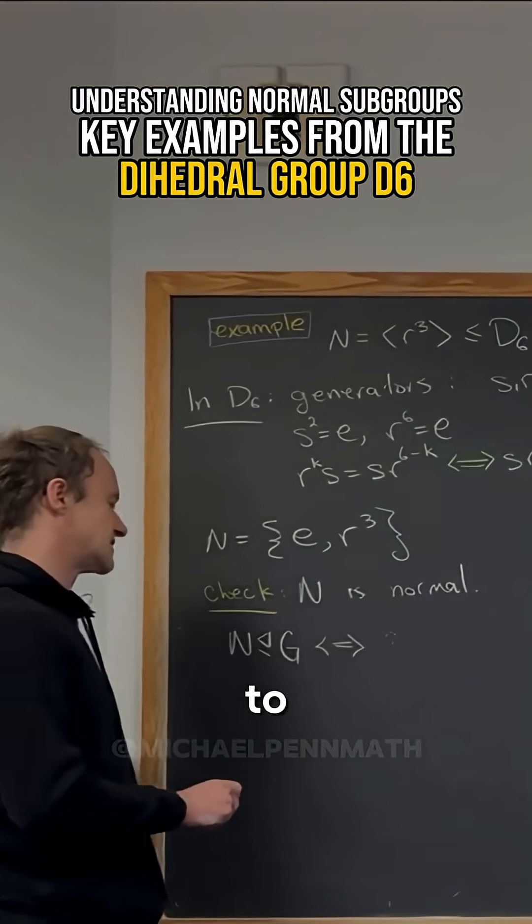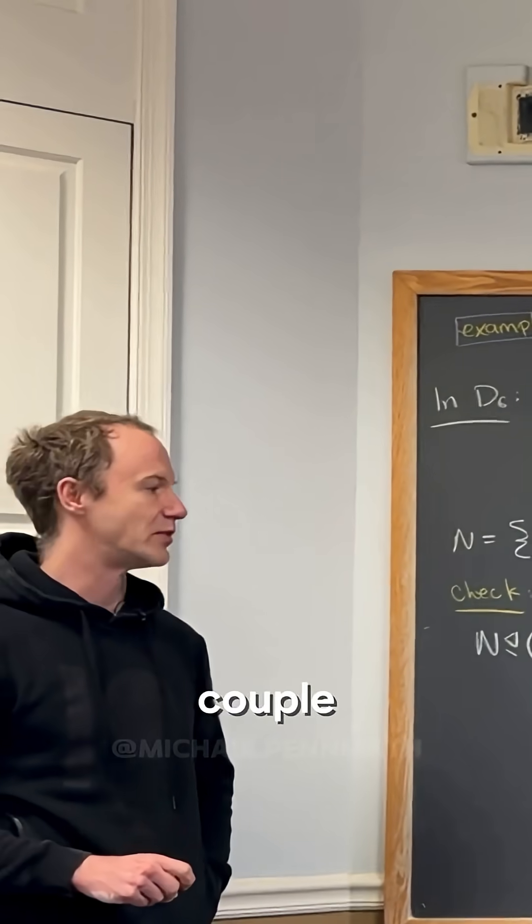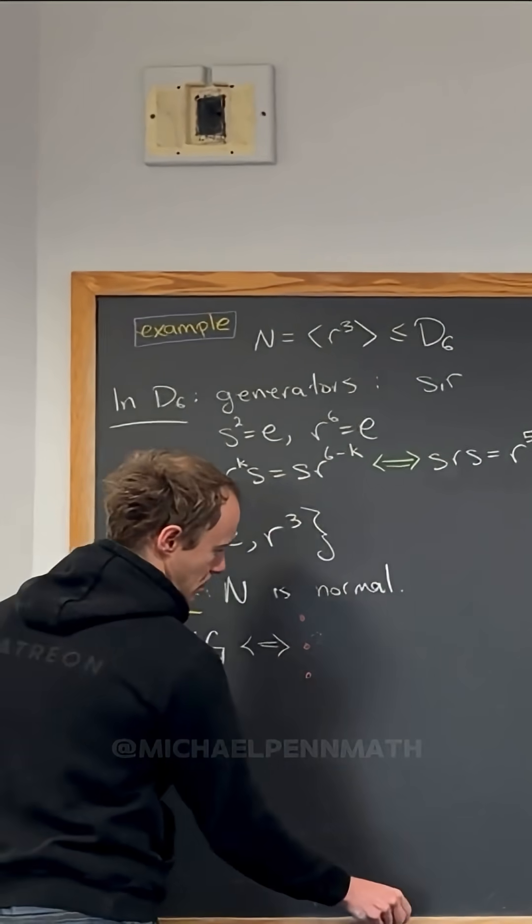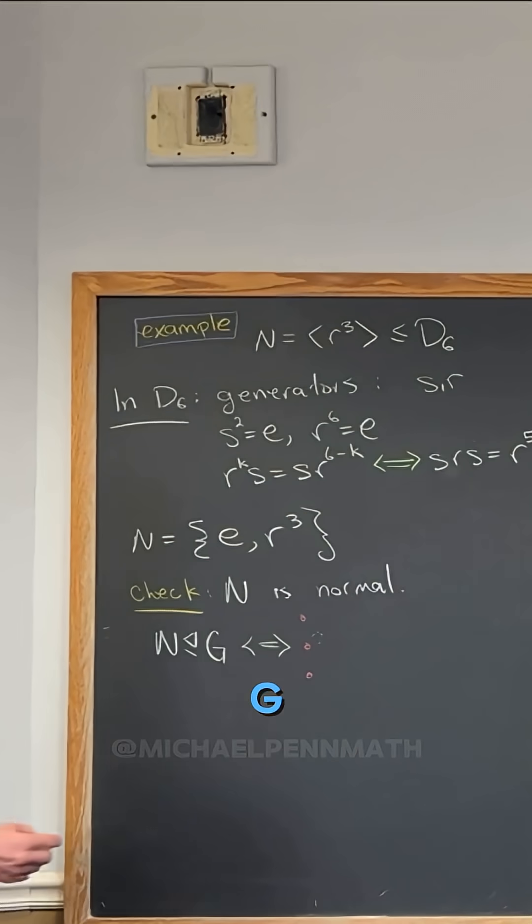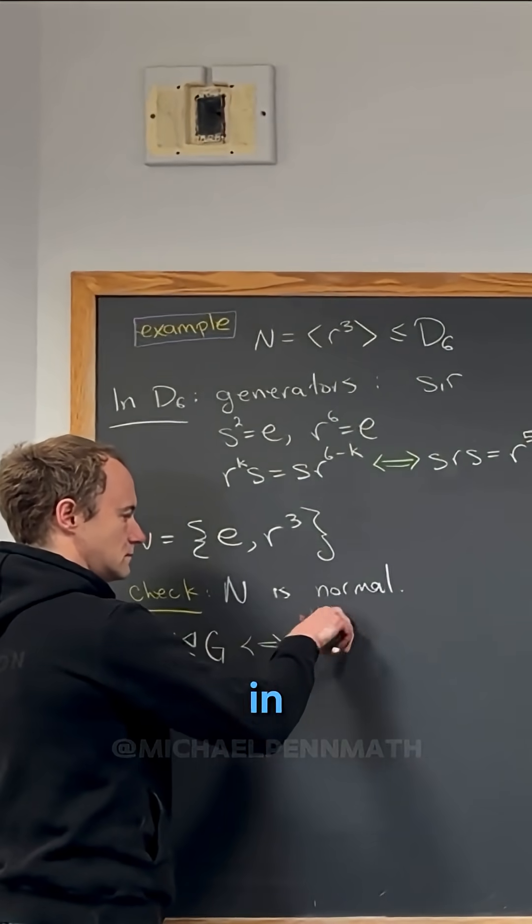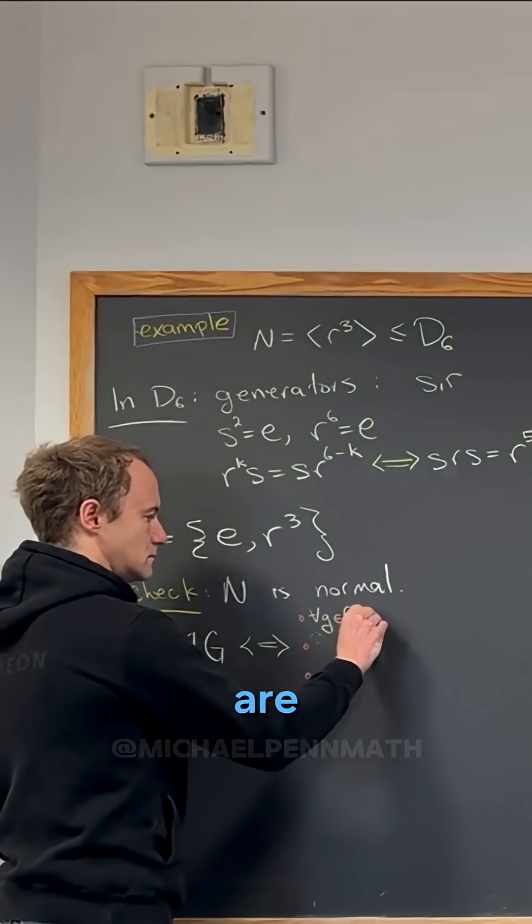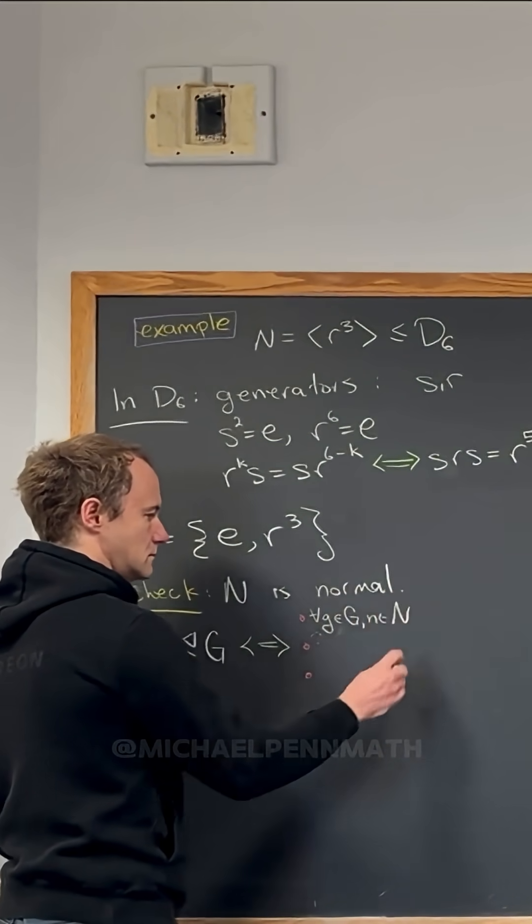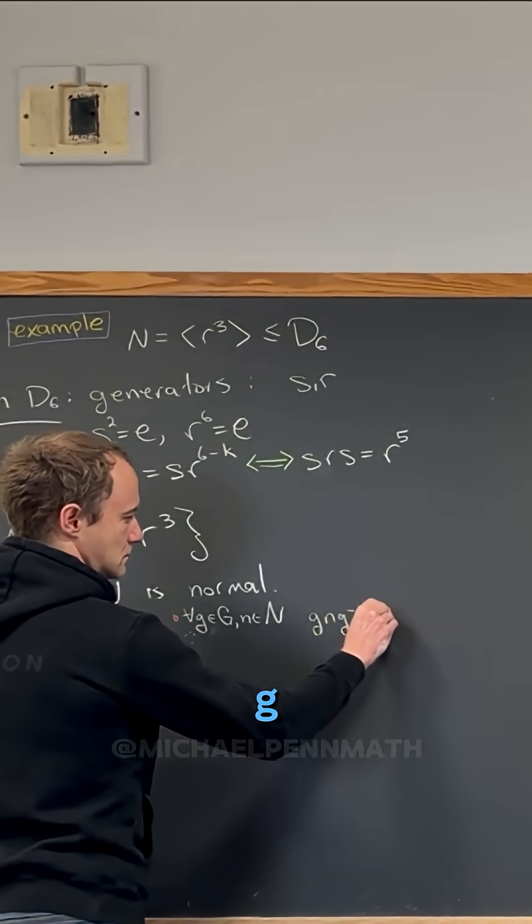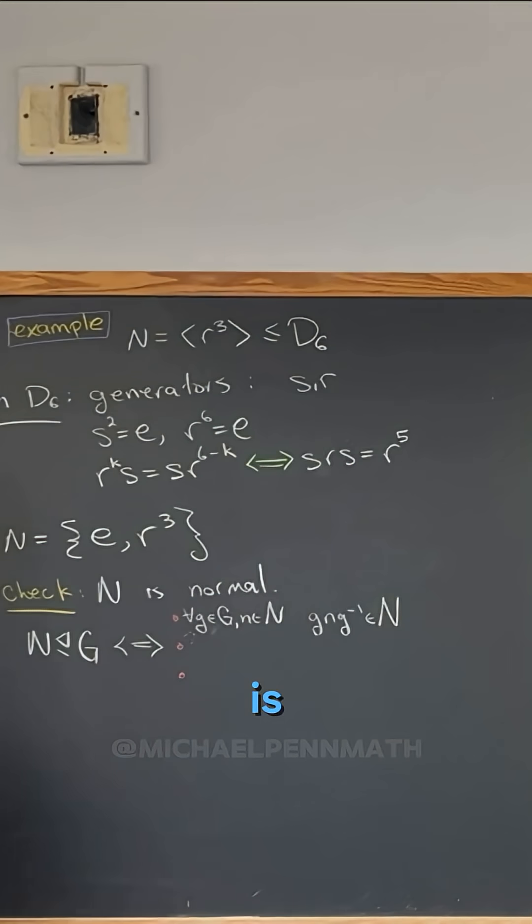Rule for N to be normal in G. There's a couple of them, right? It's if for all g in G and n in N... Are we using N? We're using another thing. Oh, I'm using N. gNg^(-1) is in N.